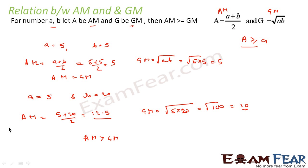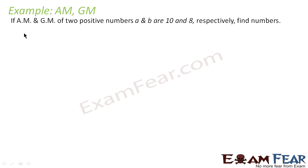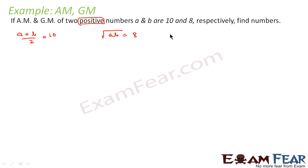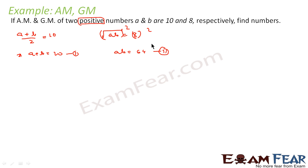Let's take one example: if the AM and GM of two positive numbers a and b are 10 and 8 respectively, find the numbers. AM is (a + b)/2 = 10, so a + b = 20 — this is equation one. GM is root(ab) = 8. Squaring this equation gives ab = 64 — this is equation two.